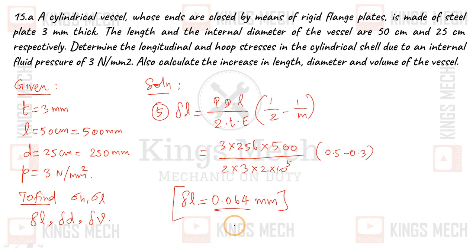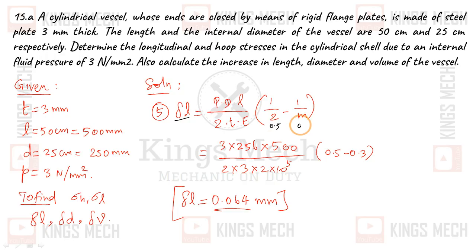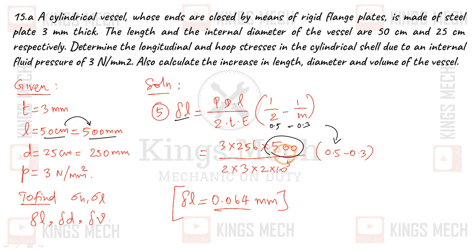The change in length δL = P × D × L / (2tE) × (1/2 − 1/m). Substituting: 1/2 = 0.5, and 1/m = 0.3. Now substituting D, L, and the other values into the expression.